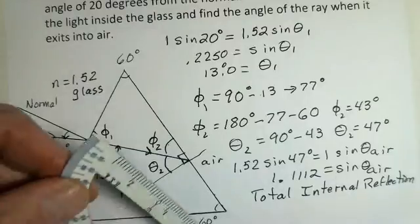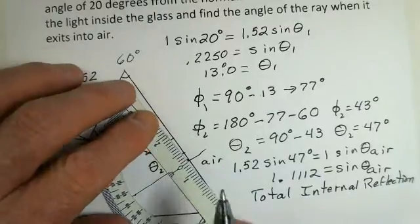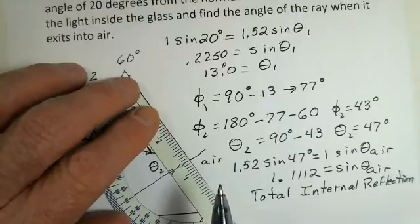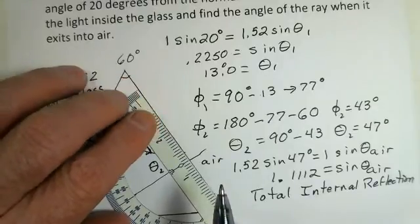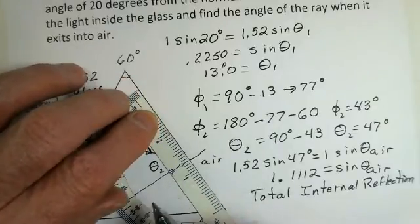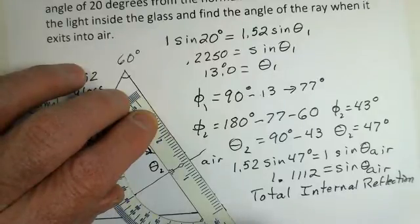Theta 2 is 47 degrees, so the ray is going to bounce off at 47 degrees for the reflected ray, since the angle of the incoming ray equals the angle of the reflected ray. The normal is 90 degrees, and measuring out to 47 degrees, the reflected ray goes down from there.